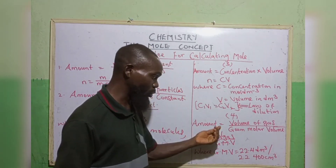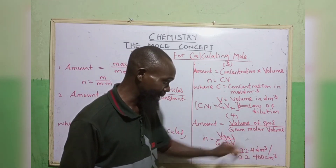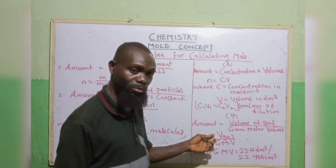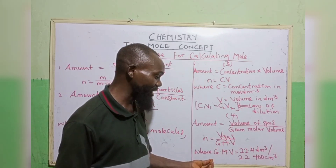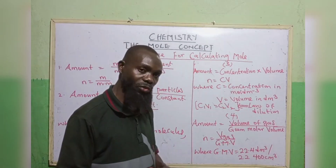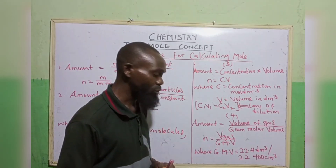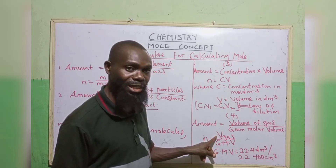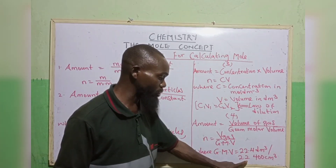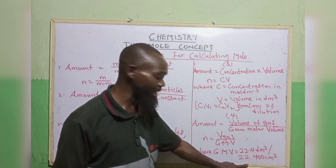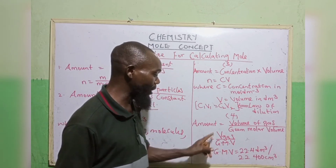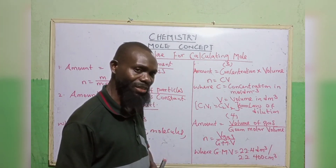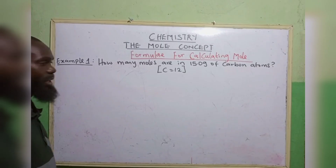Formula four: amount equals to volume of gas divided by gram molar volume. That is n equals to V divided by GMV, where GMV equals 22.4 dm³, or 22,400 cm³. If your volume is given in cm³, use 22,400 cm³ for GMV. If your volume is given in dm³, use 22.4 dm³ for GMV.